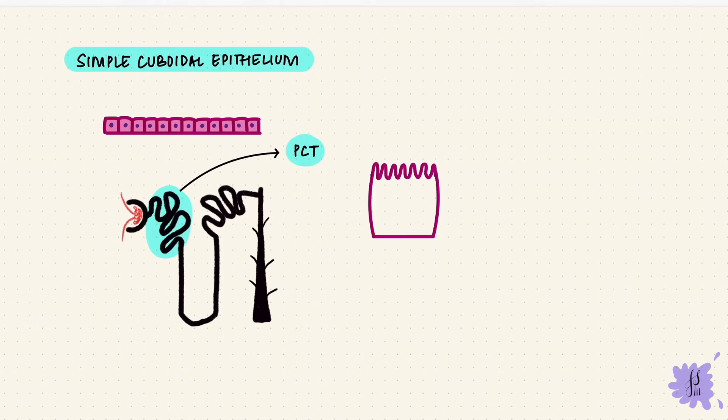This can additionally have microvilli on the apical surface and that forms a brush border. This brush border increases the surface area for absorption which makes sense because the PCT is the main site of reabsorption in the nephron.